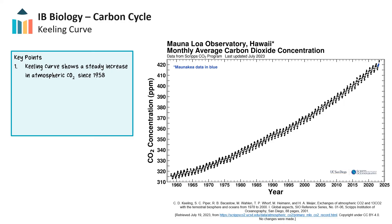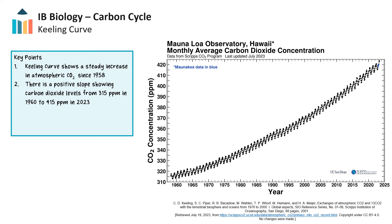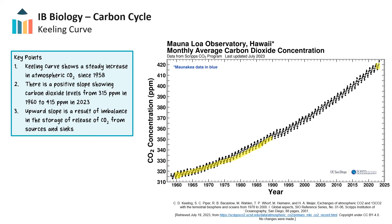The Keeling Curve is a daily measurement of atmospheric carbon dioxide measured by the Scripps Institute of Oceanography and taken from Mauna Loa Observatory in Hawaii. Many of the concepts we've looked at in this section are explained by this data. The trend in the data is a steady increase in atmospheric carbon dioxide since the measurements began in 1958, showing a rise in carbon dioxide levels from approximately 315 parts per million in 1960 to 415 parts per million in 2023. Such increasing levels of carbon dioxide are a result of enhanced carbon dioxide release into the atmosphere from continual combustion of fossil fuels. The upward slope is a result of imbalance in the storage and release of carbon from sources and sinks.